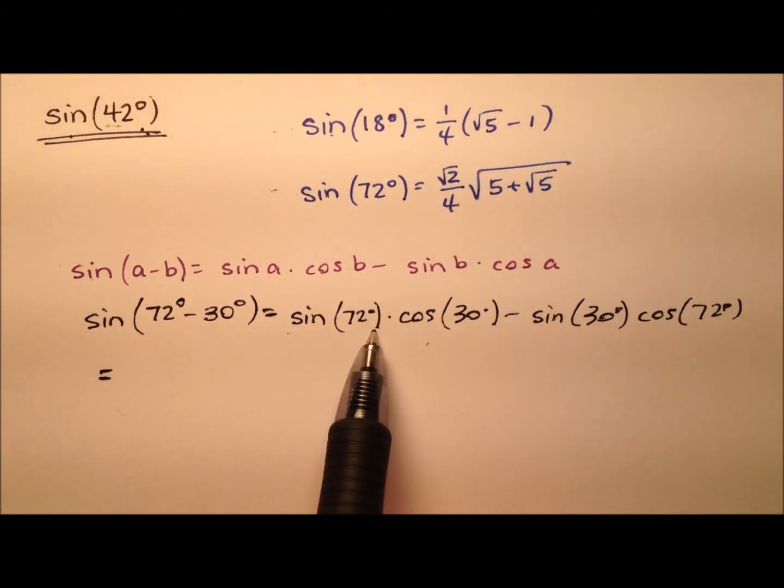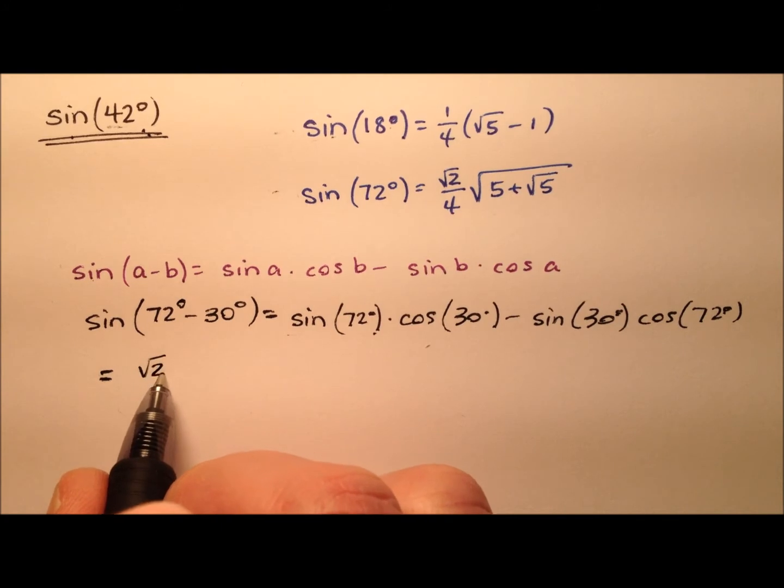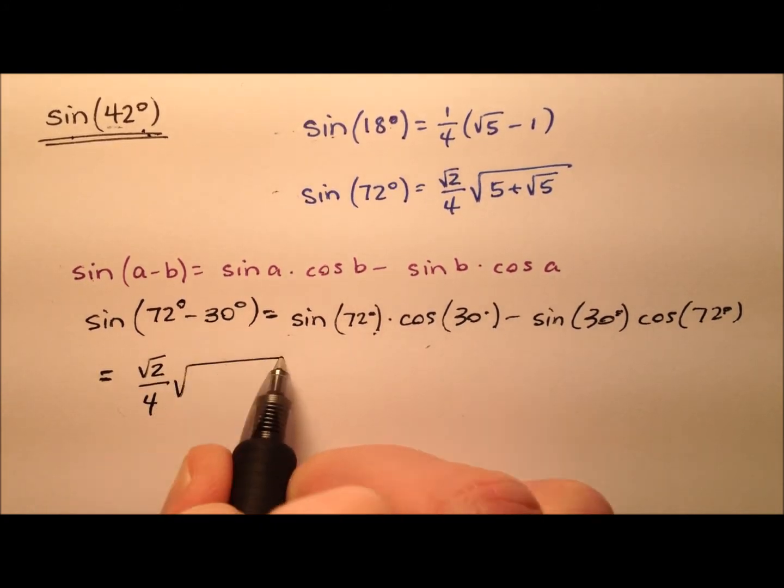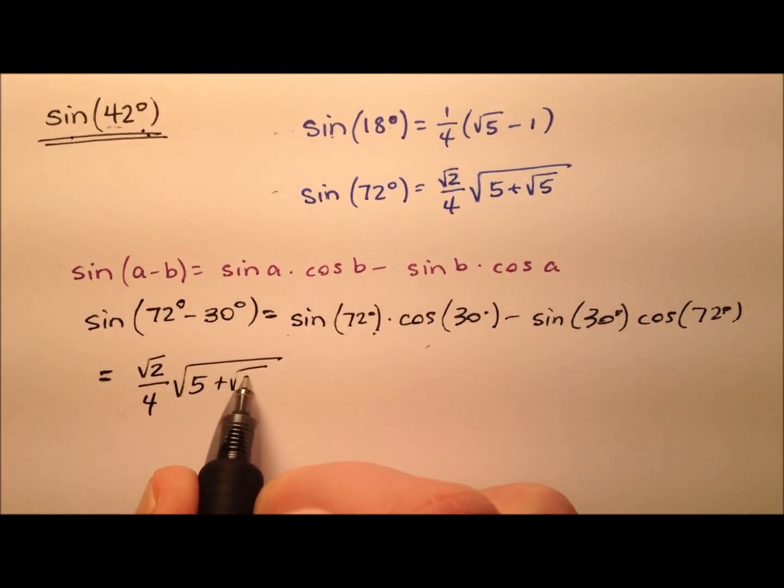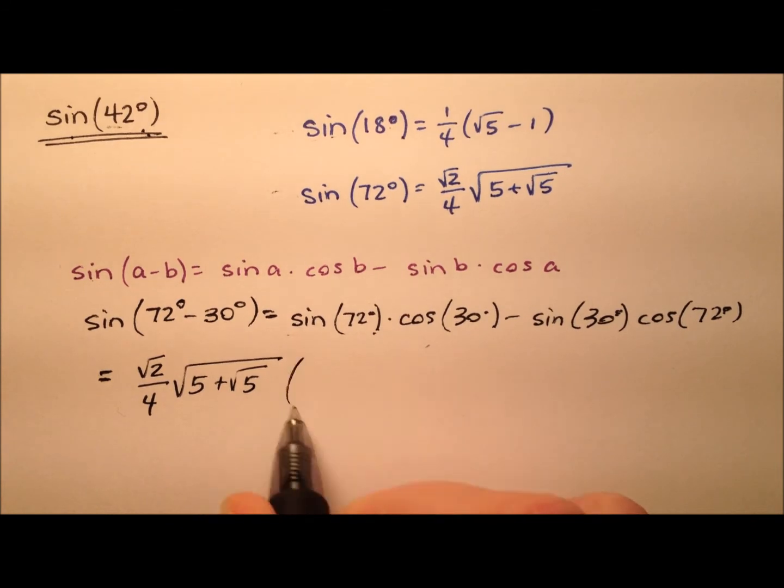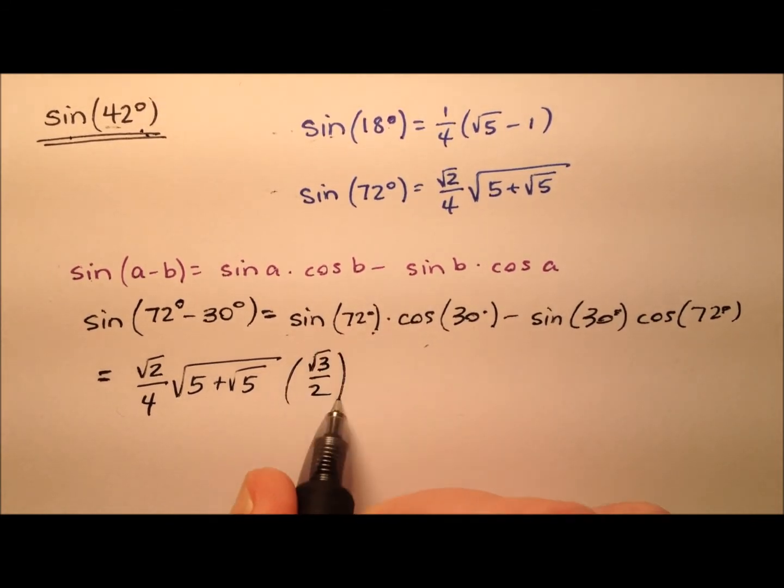So the sine of 72 degrees, I have that right there, so we have the square root of 2 over 4, and multiplied by this radical expression, and then times the cosine of 30 degrees, and that is the square root of 3 over 2.